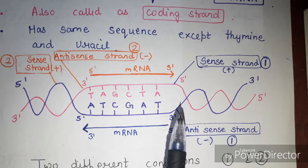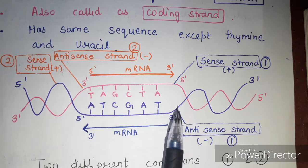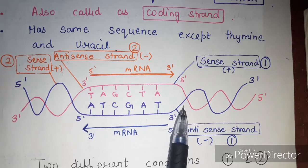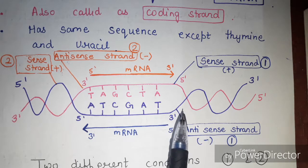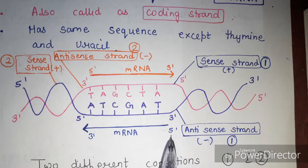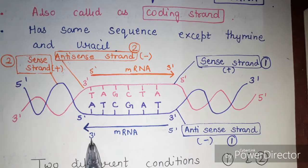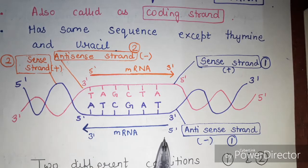The promoter is a specific region on the DNA. Where the promoter is present, that is where transcription starts. Importantly, transcription always proceeds in the 5-prime to 3-prime direction.